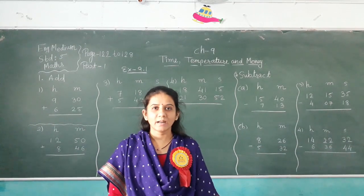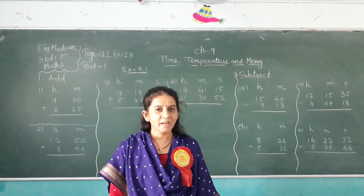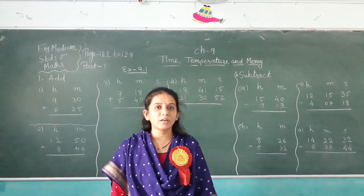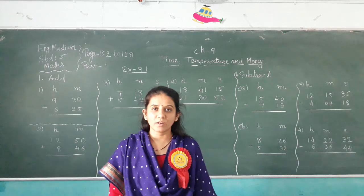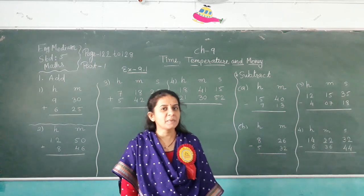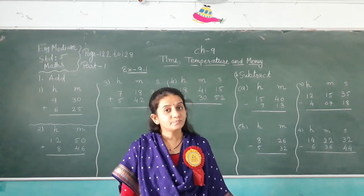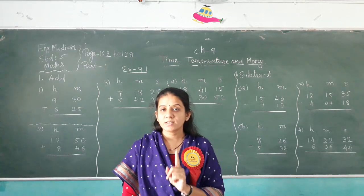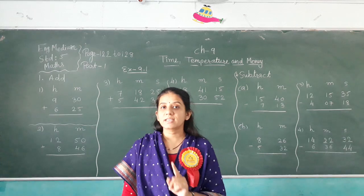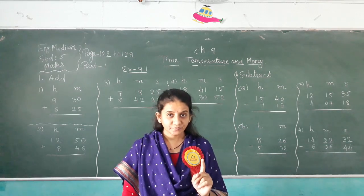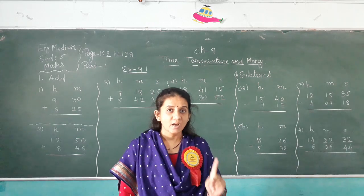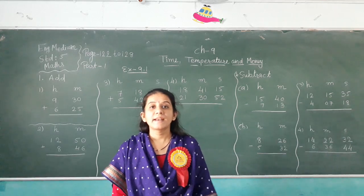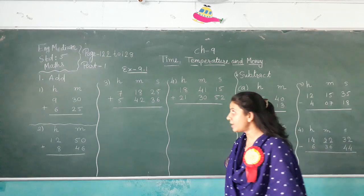Children, let's learn from reference book chapter number 9: Time, Temperature and Money. In this chapter we learn about the 12-hour clock and 24-hour clock. Key conversions: 1 minute is equal to 60 seconds, 1 hour is equal to 60 minutes, and 1 rupee is equal to 100 paise.